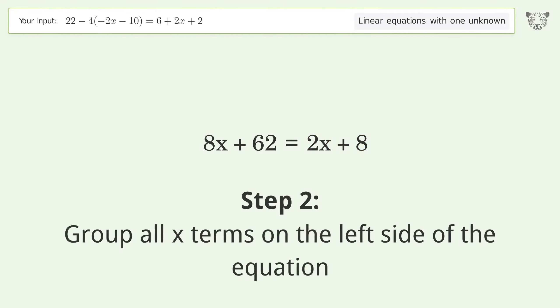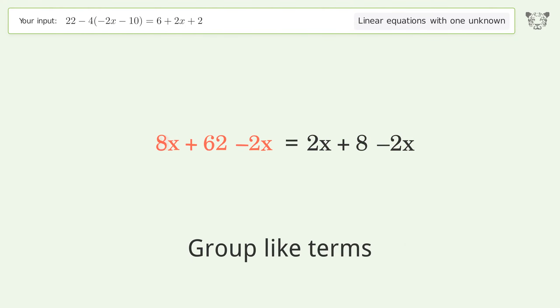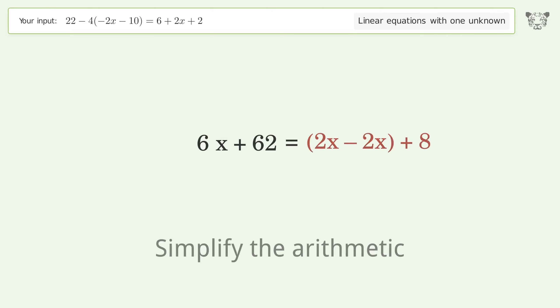Group all x terms on the left side of the equation. Subtract 2x from both sides. Group like terms. Simplify the arithmetic. Group like terms. Simplify the arithmetic.